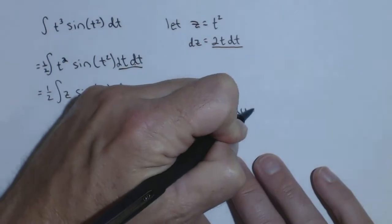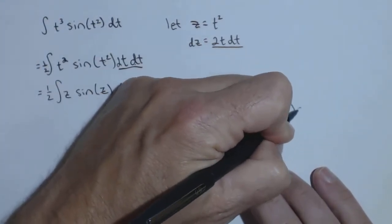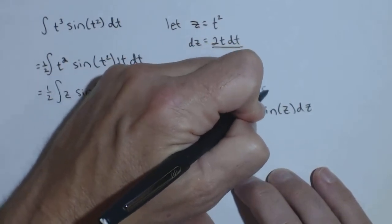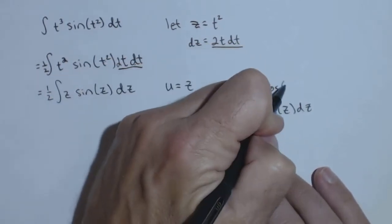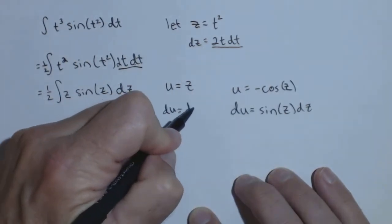And I'm going to let dv be the sine of z dz. Therefore my v is negative cosine of z, and my du is just dz.